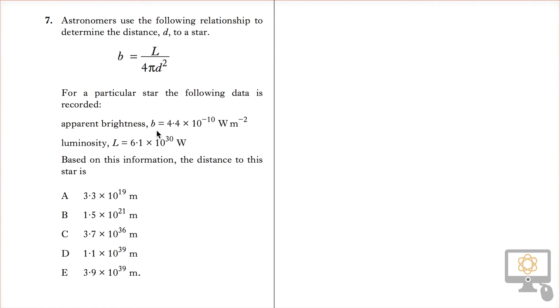It gives us the apparent brightness, so it tells us what b is. It gives us the luminosity, so it tells us what L is. Based on this information, the distance to the star is one of the following.